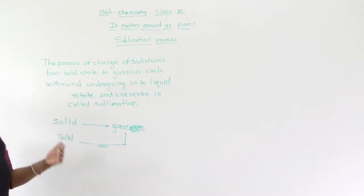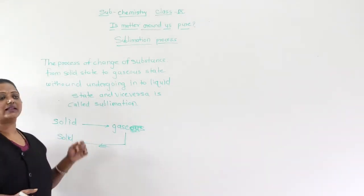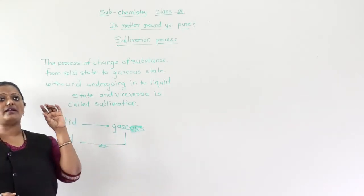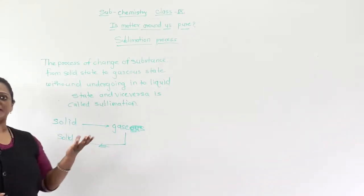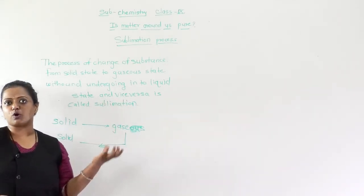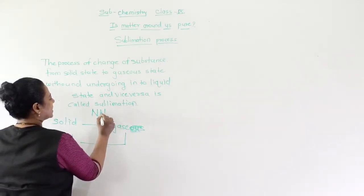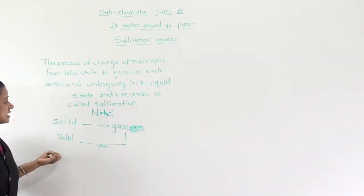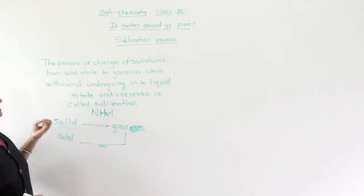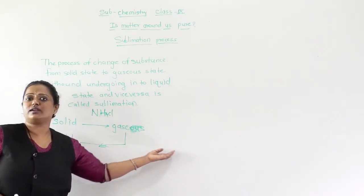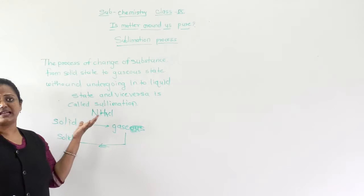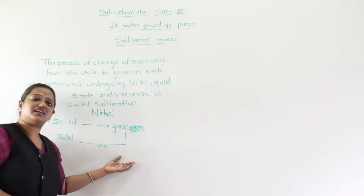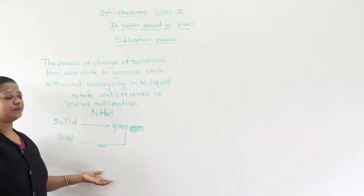Examples of sublimatory substances are camphor and naphthalene balls. Camphor is what we use in puja (called 'kapur' in Marathi), and naphthalene balls are kept in layers of clothing to protect them from insects. In the chemistry laboratory, we also use ammonium chloride (NH4Cl) as a sublimatory substance. These substances are in solid state but directly go into the gaseous state, skipping the liquid state, and from gaseous state return directly to solid state.